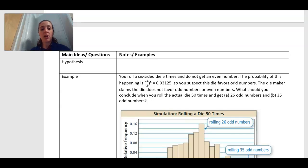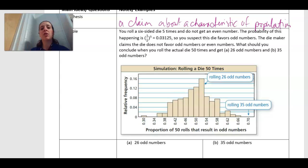Okay, so our next big thing here is we're going to be dealing with hypotheses and we're going to be testing these hypotheses in the next couple of sections and lessons. So what the heck is a hypothesis? A hypothesis is a claim about a characteristic of a population. You've probably heard hypothesis in science class and in other classes. When we're using it here, we're really just testing if the claim is true or false. So here's our big example: you roll a six-sided die five times and do not get an even number. That seems unlikely. The probability of this happening is really not likely. So I suspect that the die favors odd numbers.